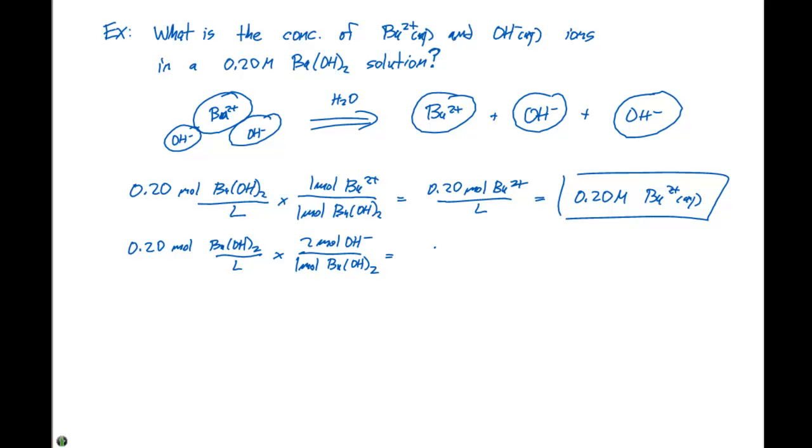This gives us 0.40 moles of OH⁻ per liter of solution. That means our concentration of hydroxide ions is 0.40 molar OH⁻.